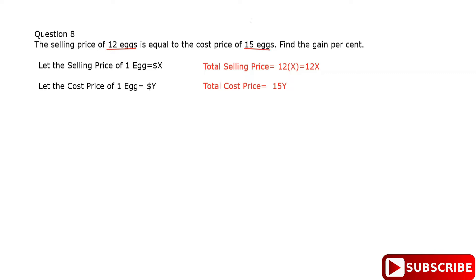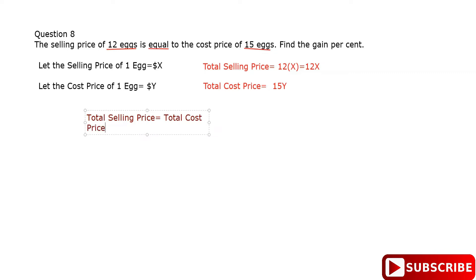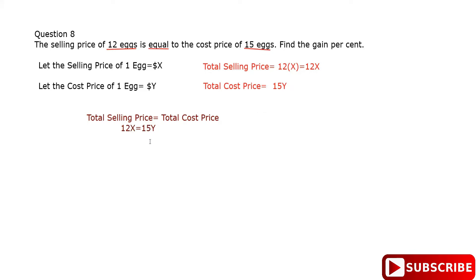They told us that the selling price is equal to the cost price. So the total selling price equals the total cost price, which means 12x is equal to 15y.